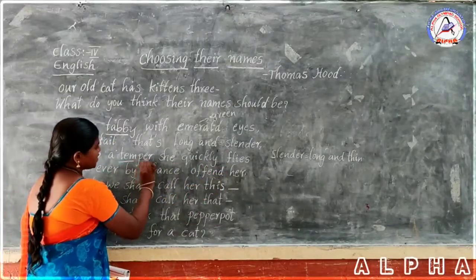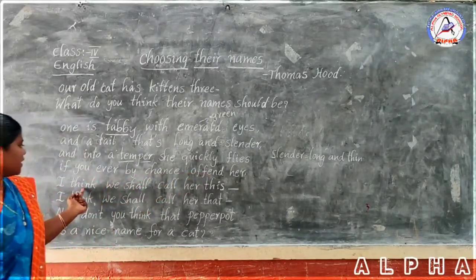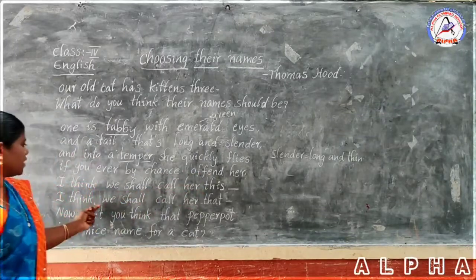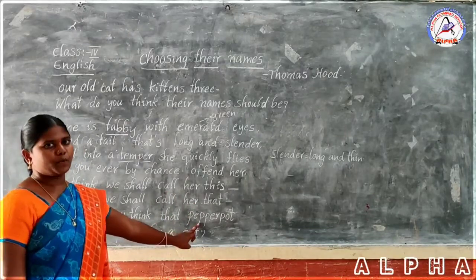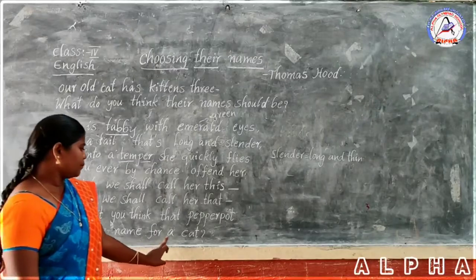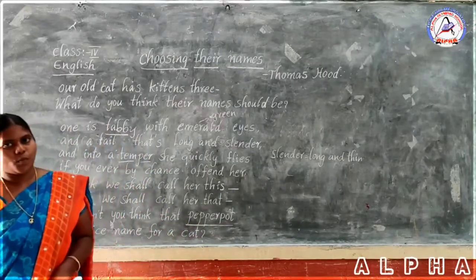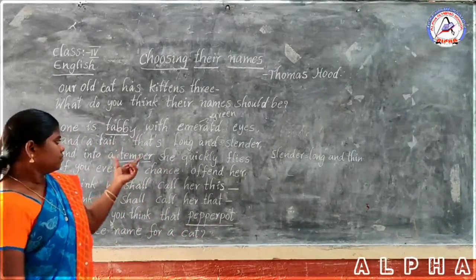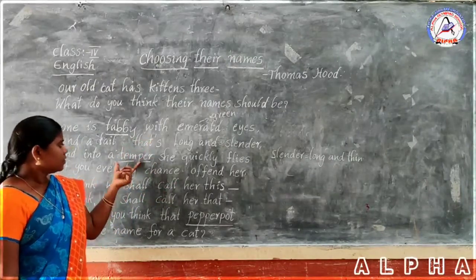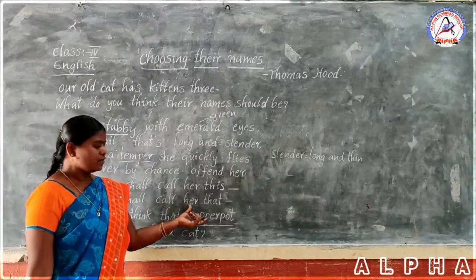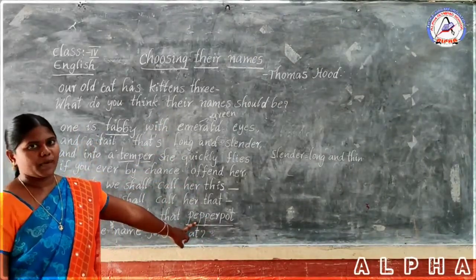This cat gets angry quickly. 'If you ever by chance offend her, I think we shall call her Pepper Pot.' Don't you think that Pepper Pot is a nice name for a cat? The poet chooses this cat's name as Pepper Pot because this cat gets angry quickly, and the poet compares this cat's temper to pepper.